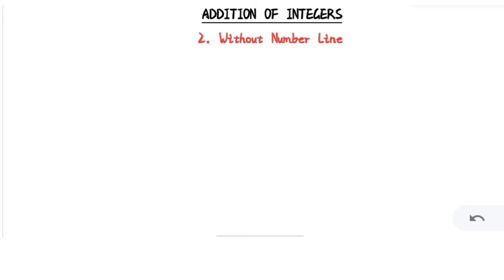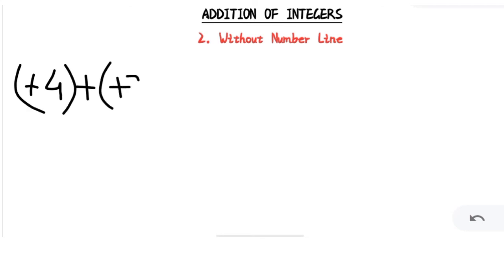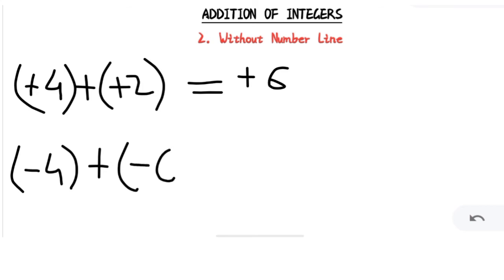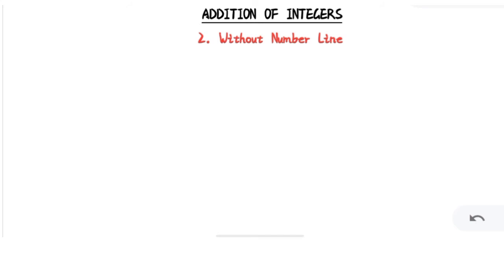Now our second method of addition is without a number line. When you have two integers with the same sign — for example, (+4) + (+2) — both are positive integers, so you simply add them and put that same sign. So 4 plus 2 is 6, and both are positive, so the answer is +6. Similarly, if both signs are negative — for example, (-4) + (-2) — you again simply add: 4 plus 2 is 6, and put the negative sign, giving -6.